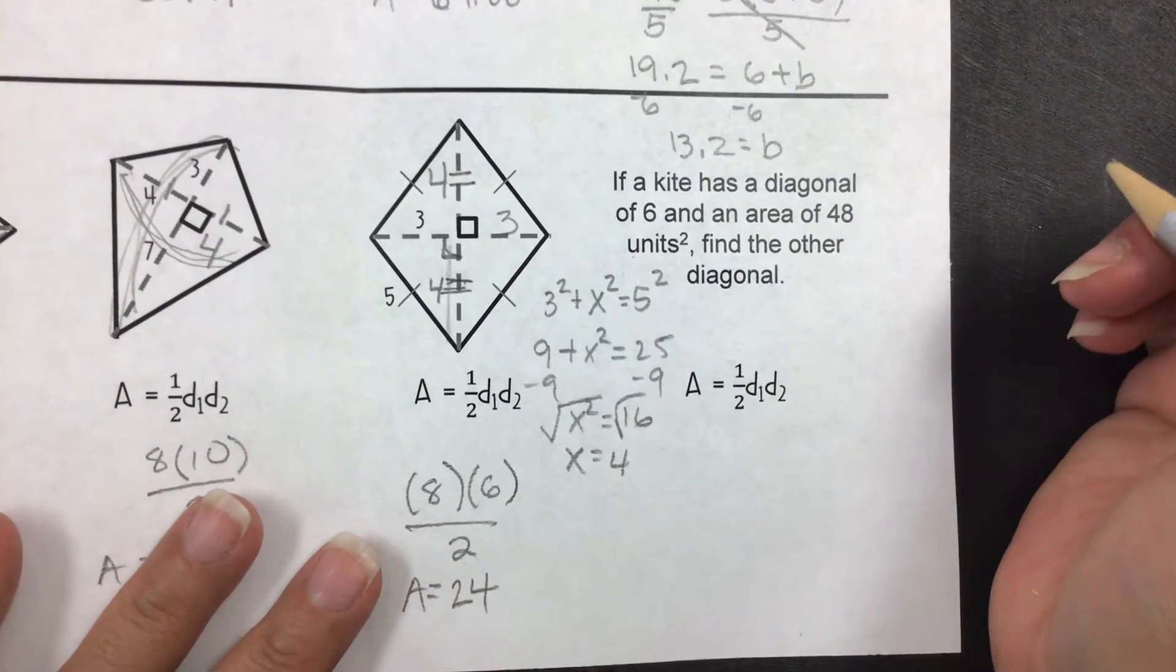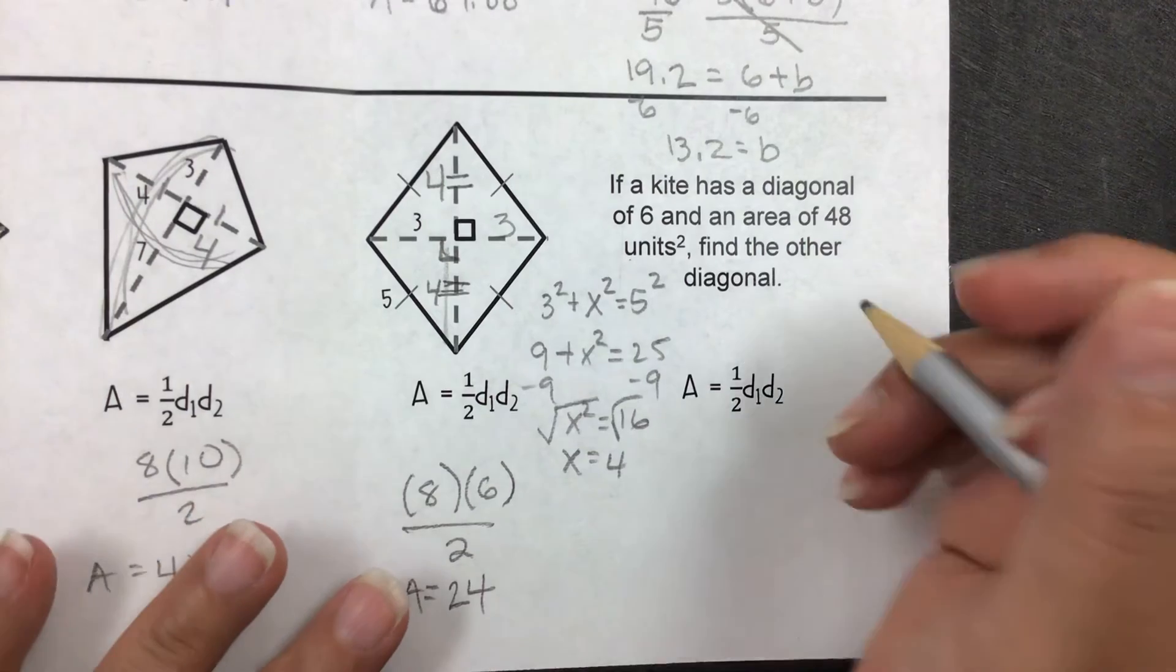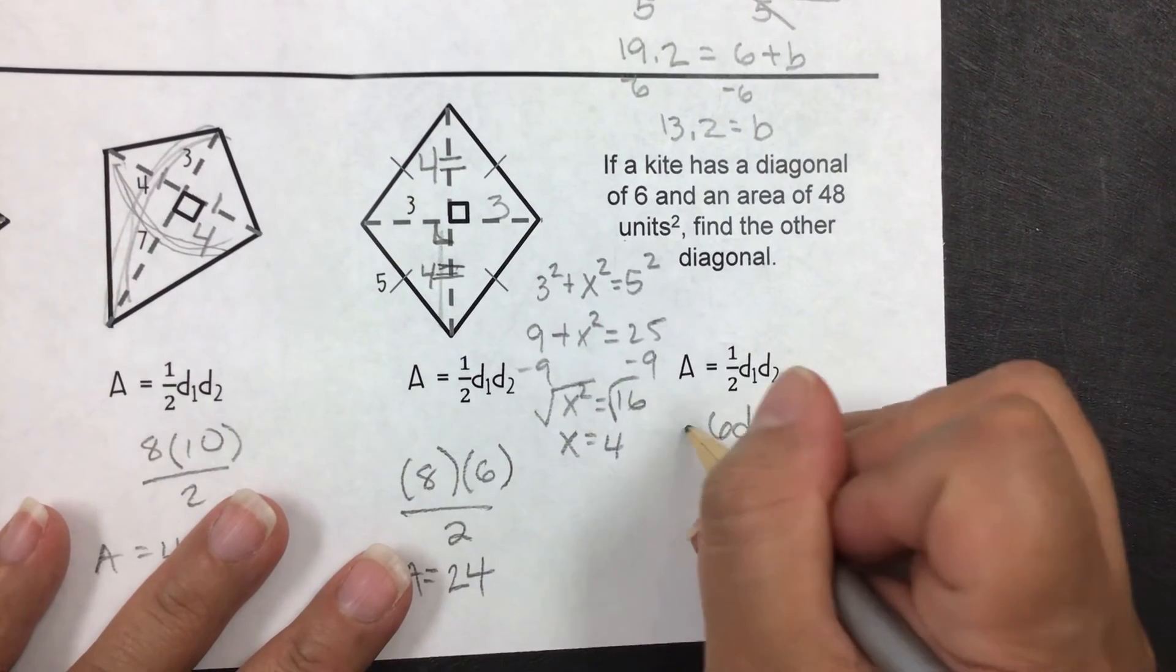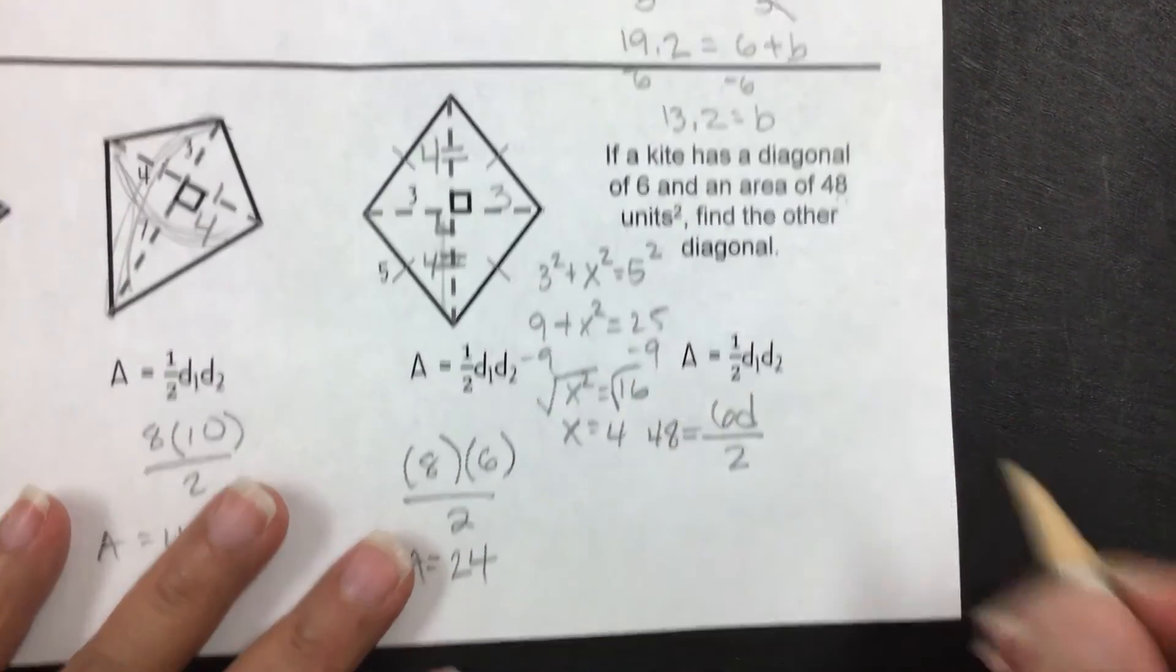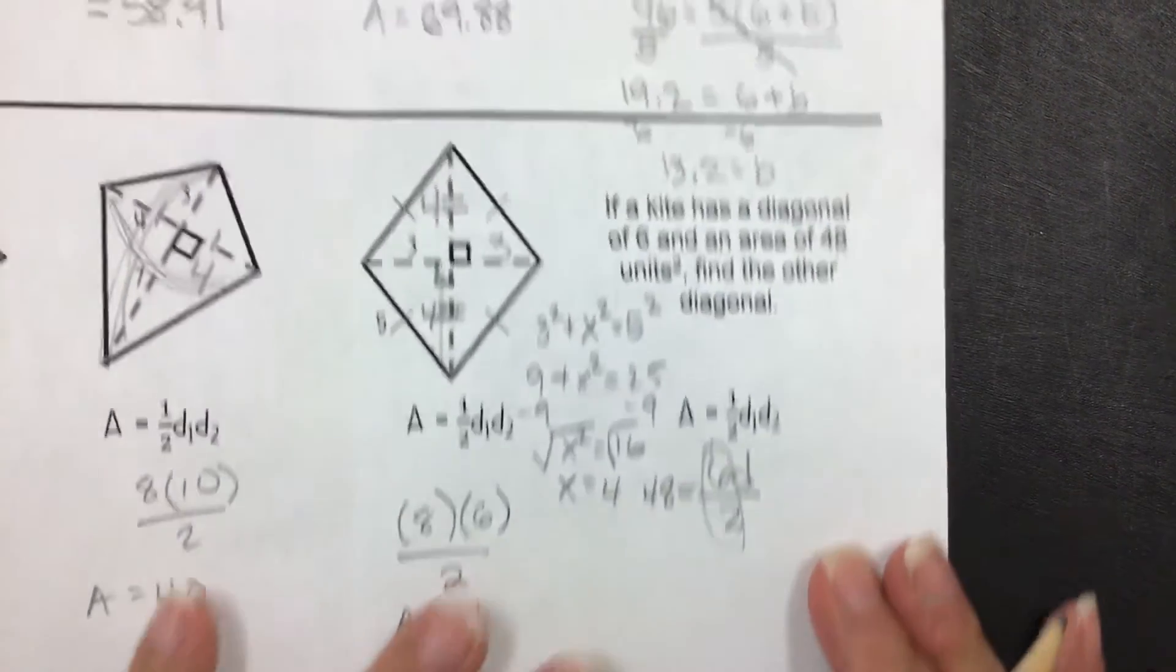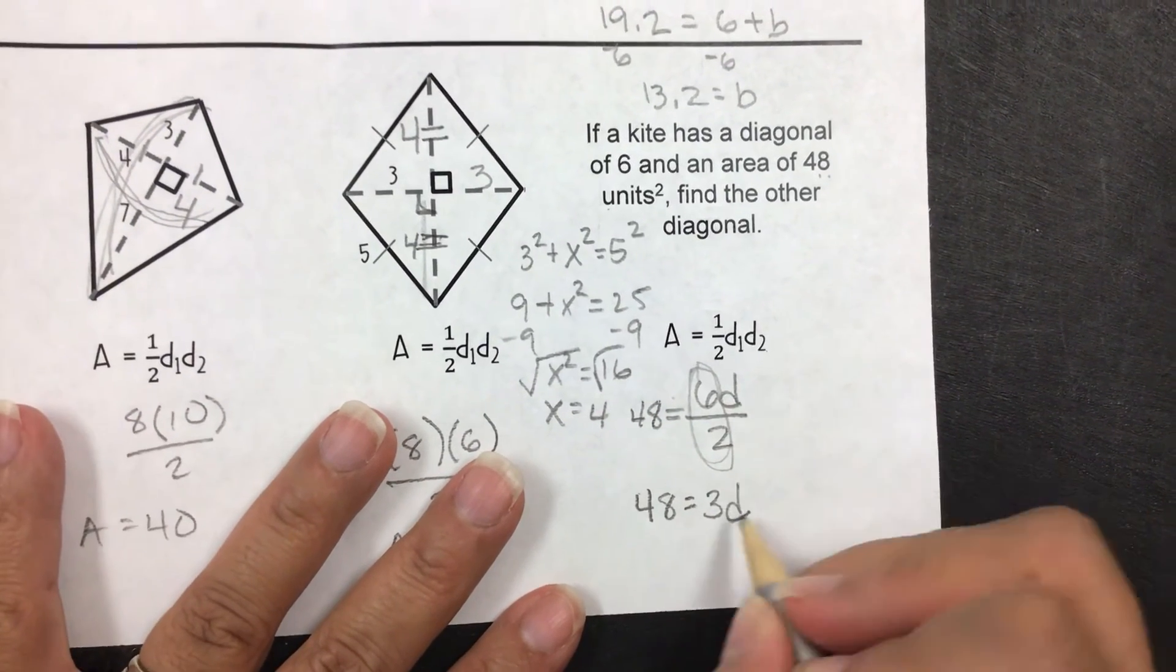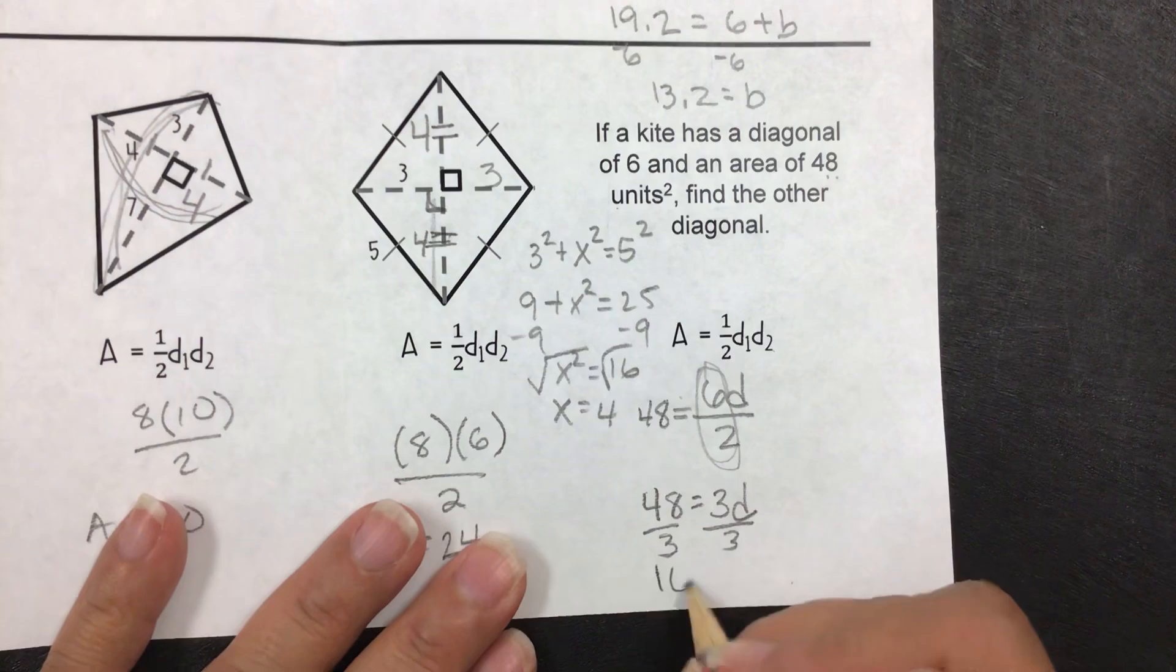Then the last one, if a kite has a diagonal of 6 and an area of 48 units, find the other diagonal. Okay, so what we have is one diagonal is 6. I don't know the other one, but that is divided by 2, and that equals this area, 48. So you can multiply by 2 and then divide by 6, or you can just simplify that fraction. The reason that I didn't simplify it here is because it's a decimal. So I can do 48 is equal to 3d divided by 3. 16 is the other diagonal.